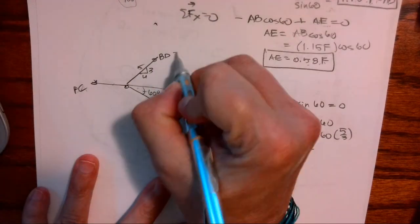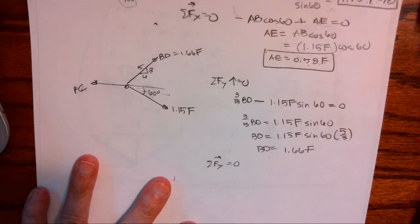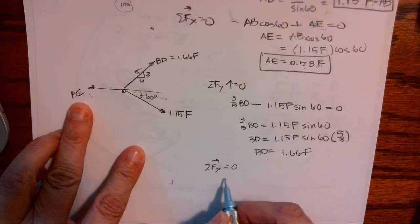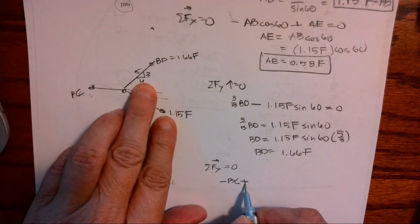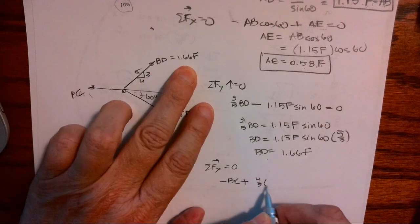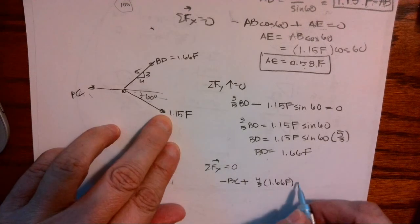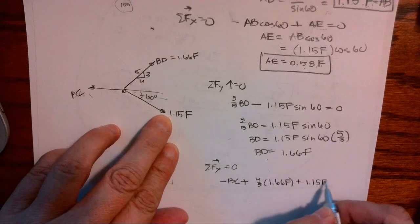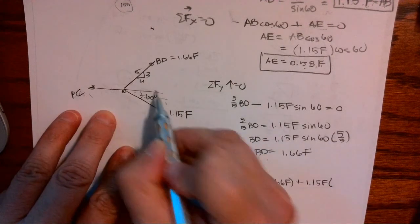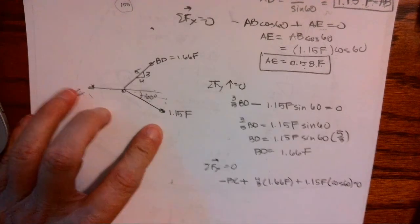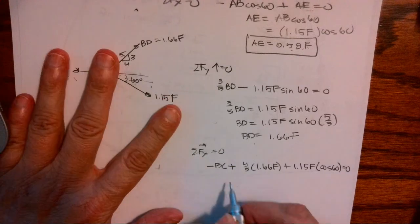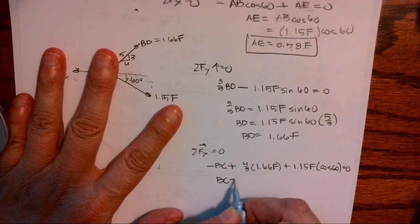Okay, so we can call this 1.66 F. So we have a negative BC plus 4/5 times 1.66 F plus 1.15 F X sine, cos, 60. This has to equal 0, we're in statics again. So we're going to isolate BC equals, going to move that over.